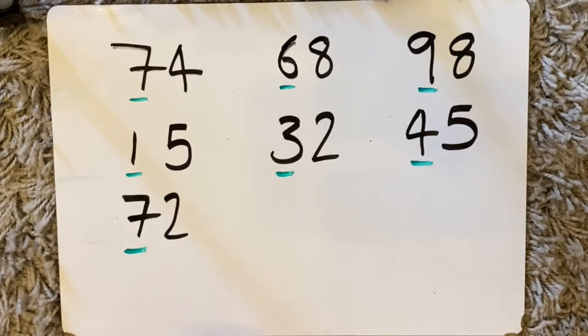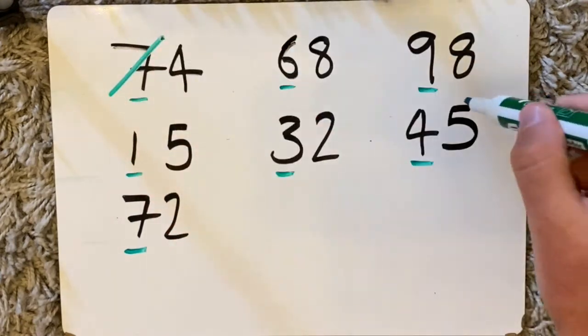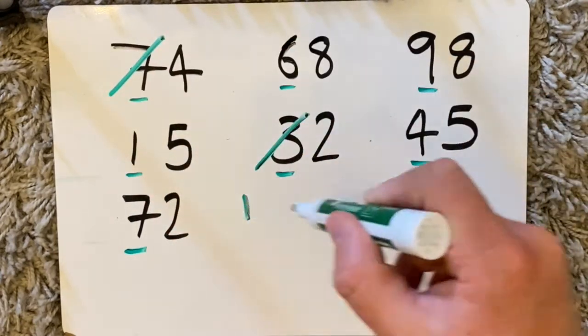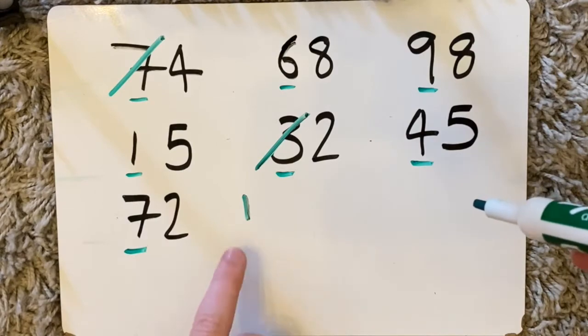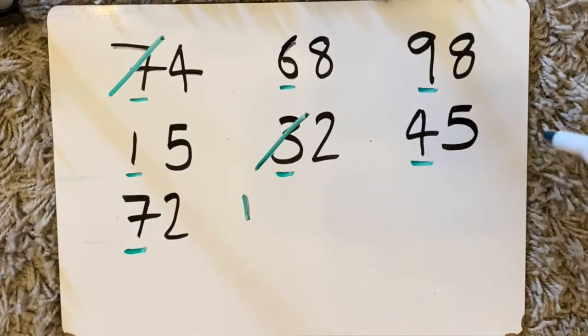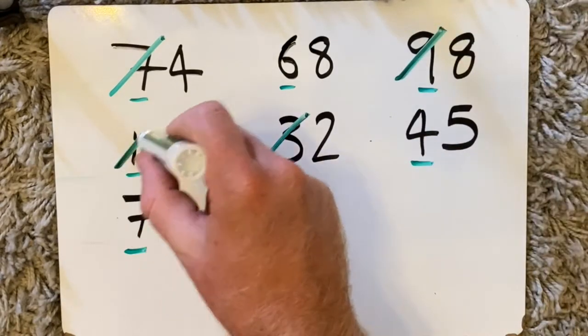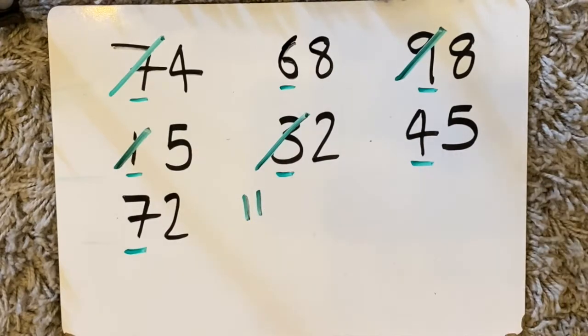Then I'm going to try and find number bonds. So there's a 7 and there's a 3. 70 and 30 makes 100 so I put 1 down. 90 and 10 make another 100. There's 200.